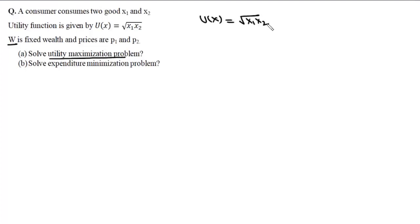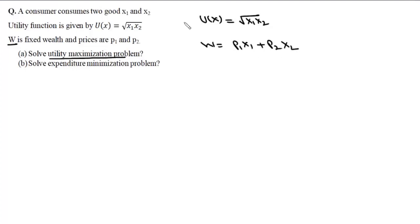The constraint in this problem is the budget constraint. The fixed wealth w equals p1·x1 + p2·x2, where w is fixed wealth and p1, p2 are prices. So now we have our objective function and also our equality constraint.